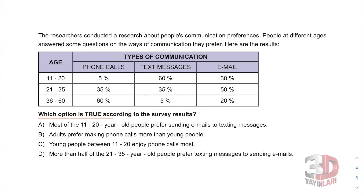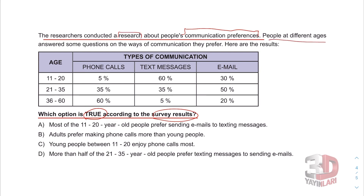Which option is true according to the survey results? Anket sonuçlarına göre hangisi doğrudur? The researchers conducted a research about people's communication preferences — iletişim yolları tercihlerini hakkında bir araştırma yapmışlar. People at different ages — farklı yaşlardaki insanlar — answered questions on the ways of communication they prefer. And here are the results.